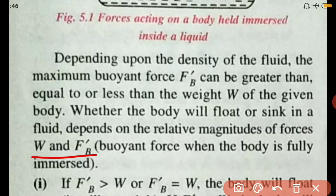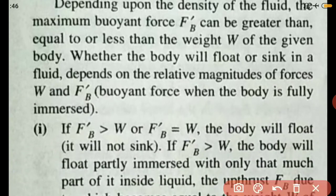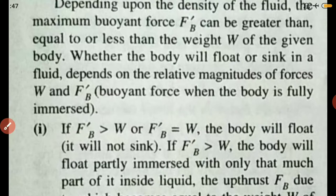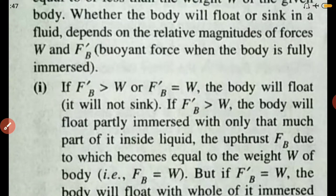In Case 1, if FB dash is greater than W, or if FB dash is equal to W, the body will float — it will not sink. If FB dash is greater than W, the body will float partly immersed with only that much part of it inside the liquid such that the buoyant force FB becomes equal to the weight of the body, that is FB equals W.